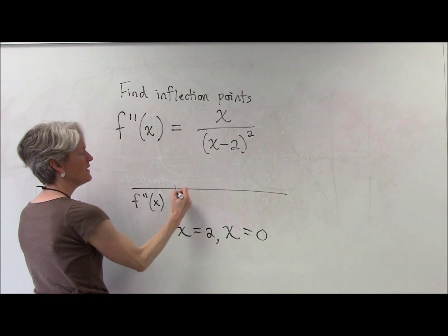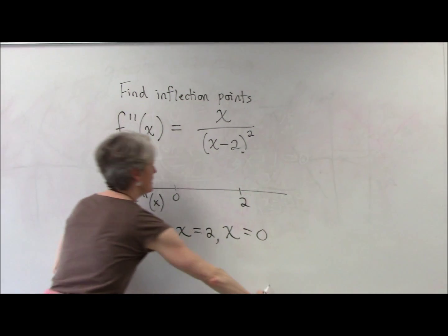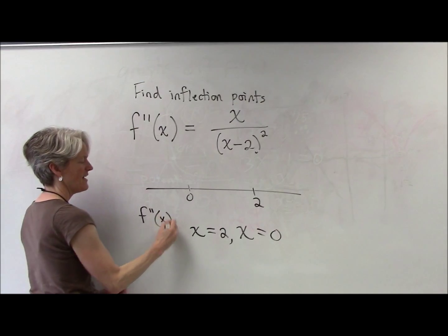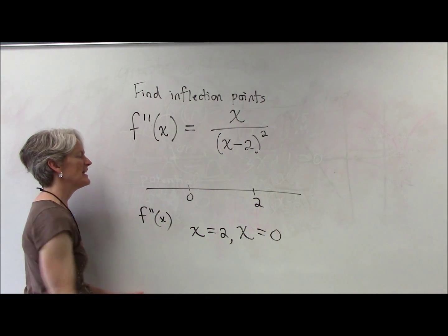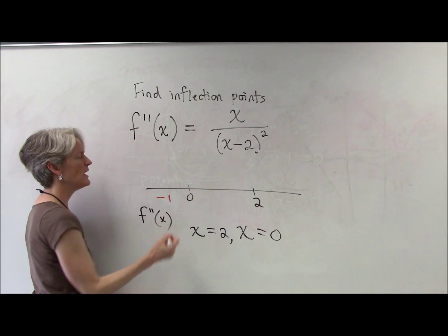All right. So here we go. I'm going to do my little number line. Number lines are so useful. It's a good thing they invented them. Otherwise, numbers would just be in any order. All right. Give me a number that's less than zero. About negative one. Negative one.